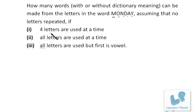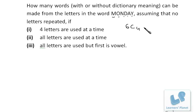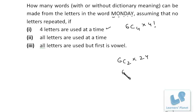For 4-letter words from MONDAY's 6 letters: first select 4 letters — that's 6C4 ways. Then arrange the 4 selected letters in 4! ways. So the answer is 6C4 × 4! = 6C2 × 24 = (6×5/2) × 24 = 15 × 24 = 360 ways.